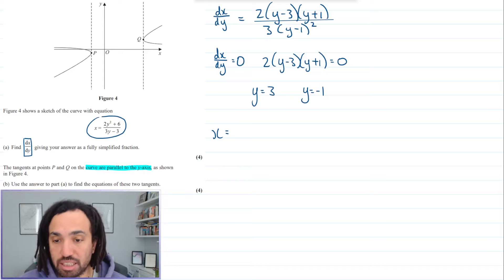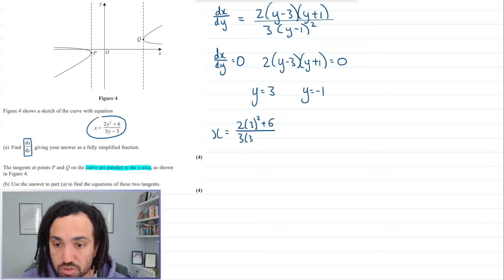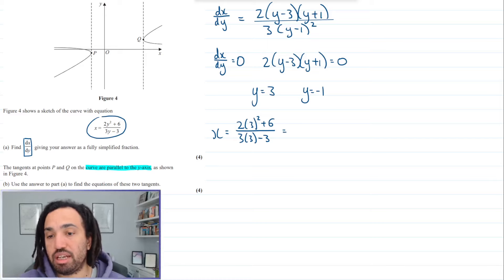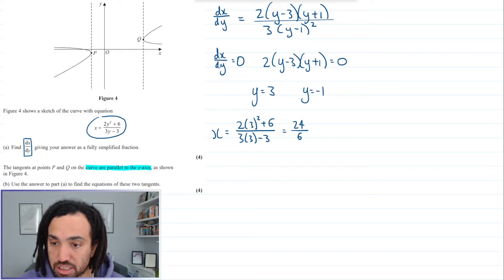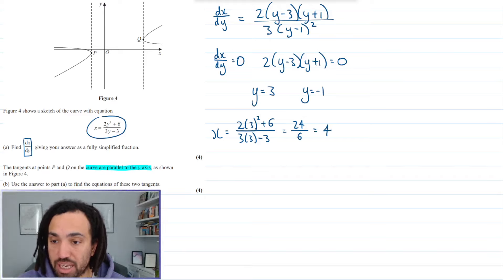So we get x equals 2 lots of 3 squared plus 6 all over 3 lots of 3 minus 3. And this gives us 18 plus 6, so 24 on top and 9 minus 3, which is 6 on the bottom. So that gives me x equals 4.